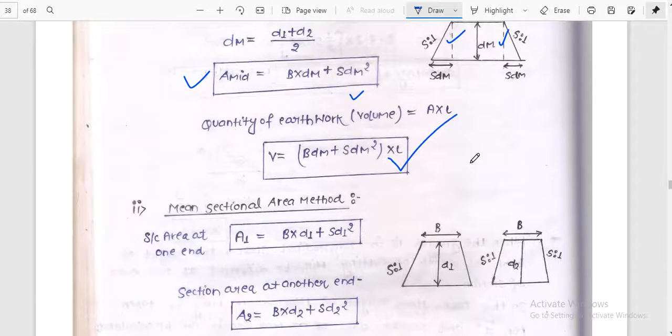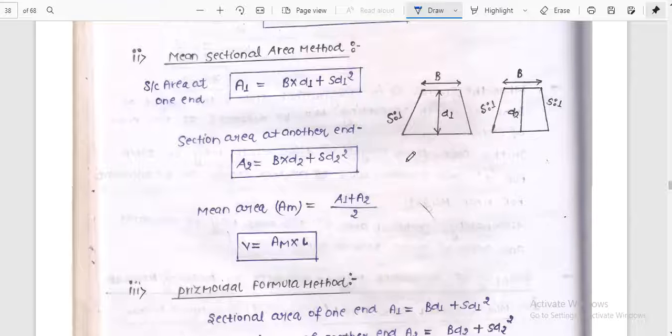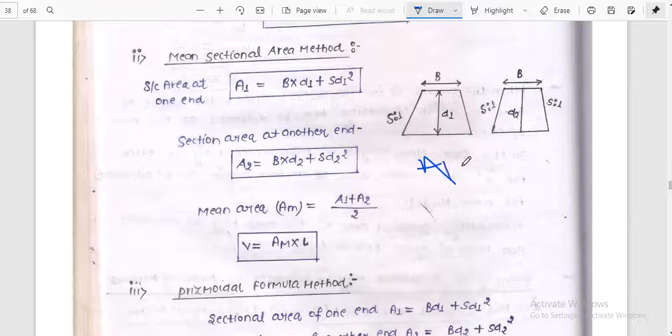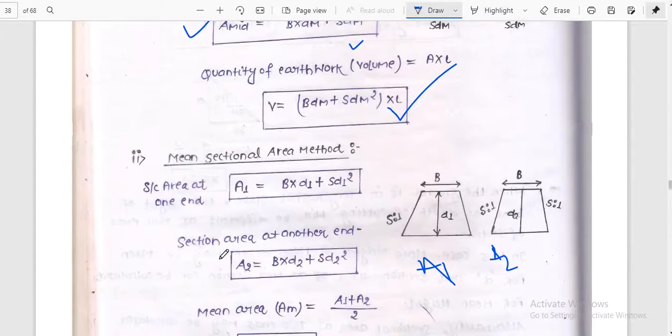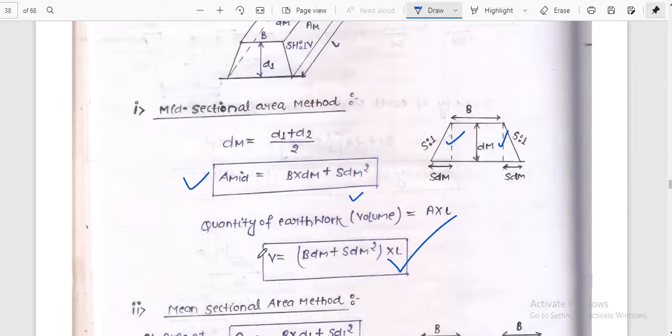In mean sectional area method, first find A1 and then find A2. After that we are adding the areas. The area will be the average, the mid sectional area, with reference to Dm, the mid height, to get the mid sectional area.